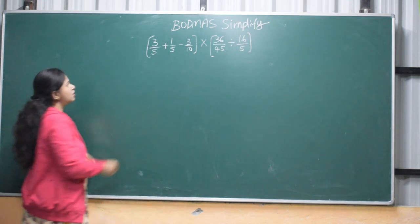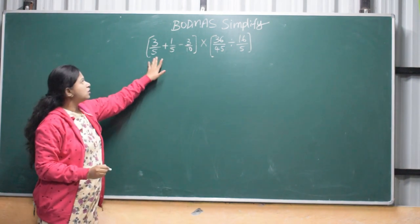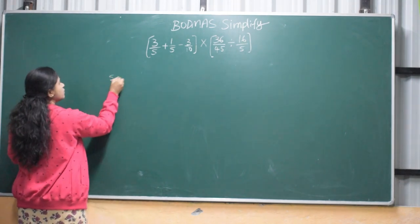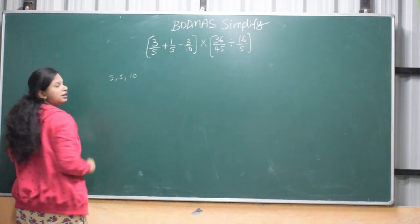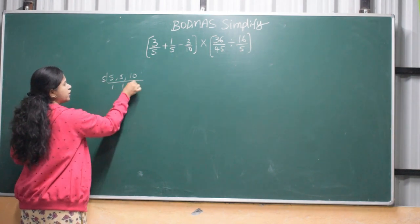Let's do this. This is 5 and 5, this is LCM. Denominator is LCM. 5, 5, 5 means 10. 5, 1 is 5. 5, 2 is 10.